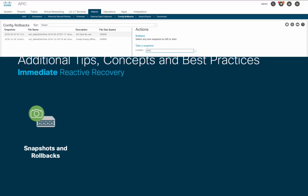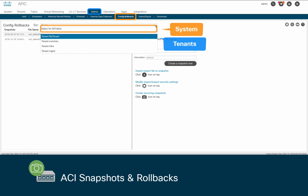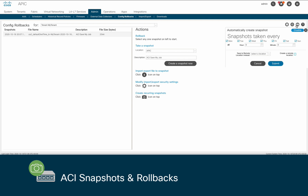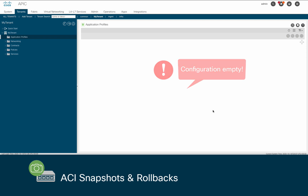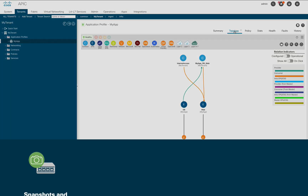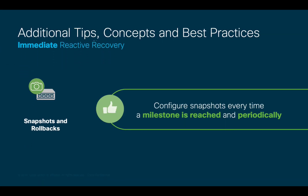This is where snapshots and rollbacks may help, since you can take a snapshot of your network configuration at the system or tenant level, either manually or periodically. This means that if somebody makes a change, such as deleting an entire application profile, you can simply roll back to any point in time with no troubleshooting involved. I strongly suggest you configure snapshots once the network is ready and every time you reach a milestone. Keep in mind that snapshots only work at the configuration level; therefore, they do not substitute full backups, which also have text support and core log files, amongst others.